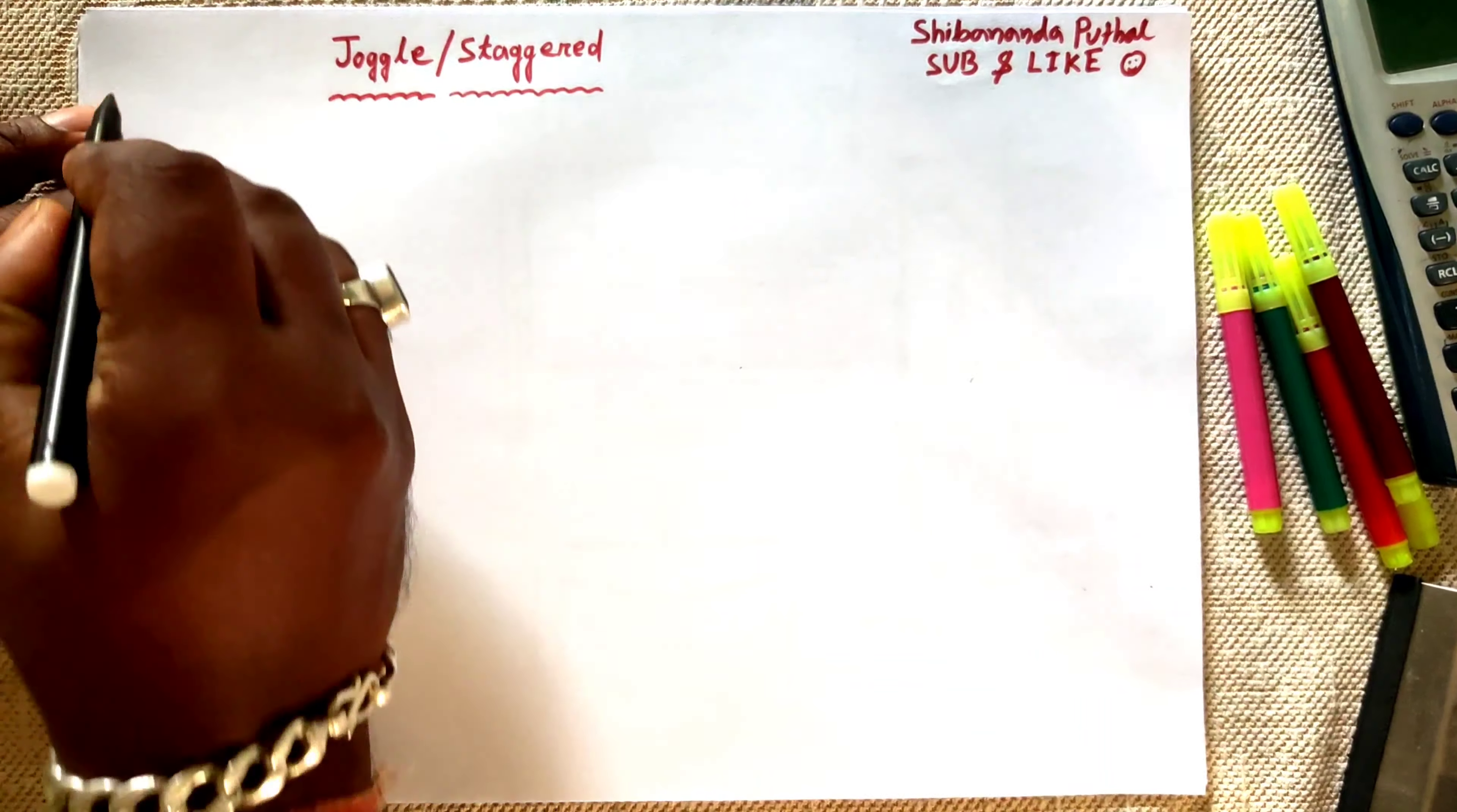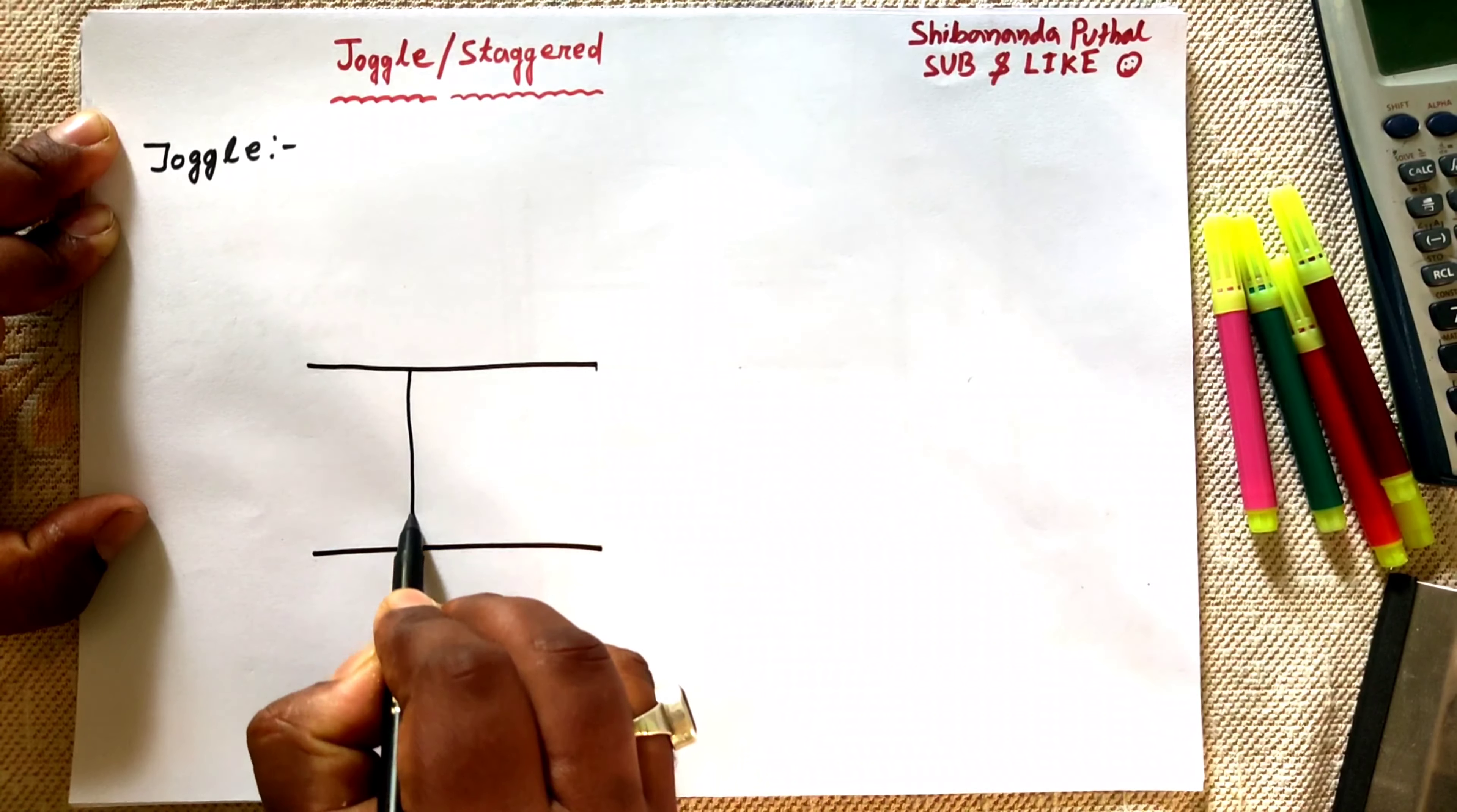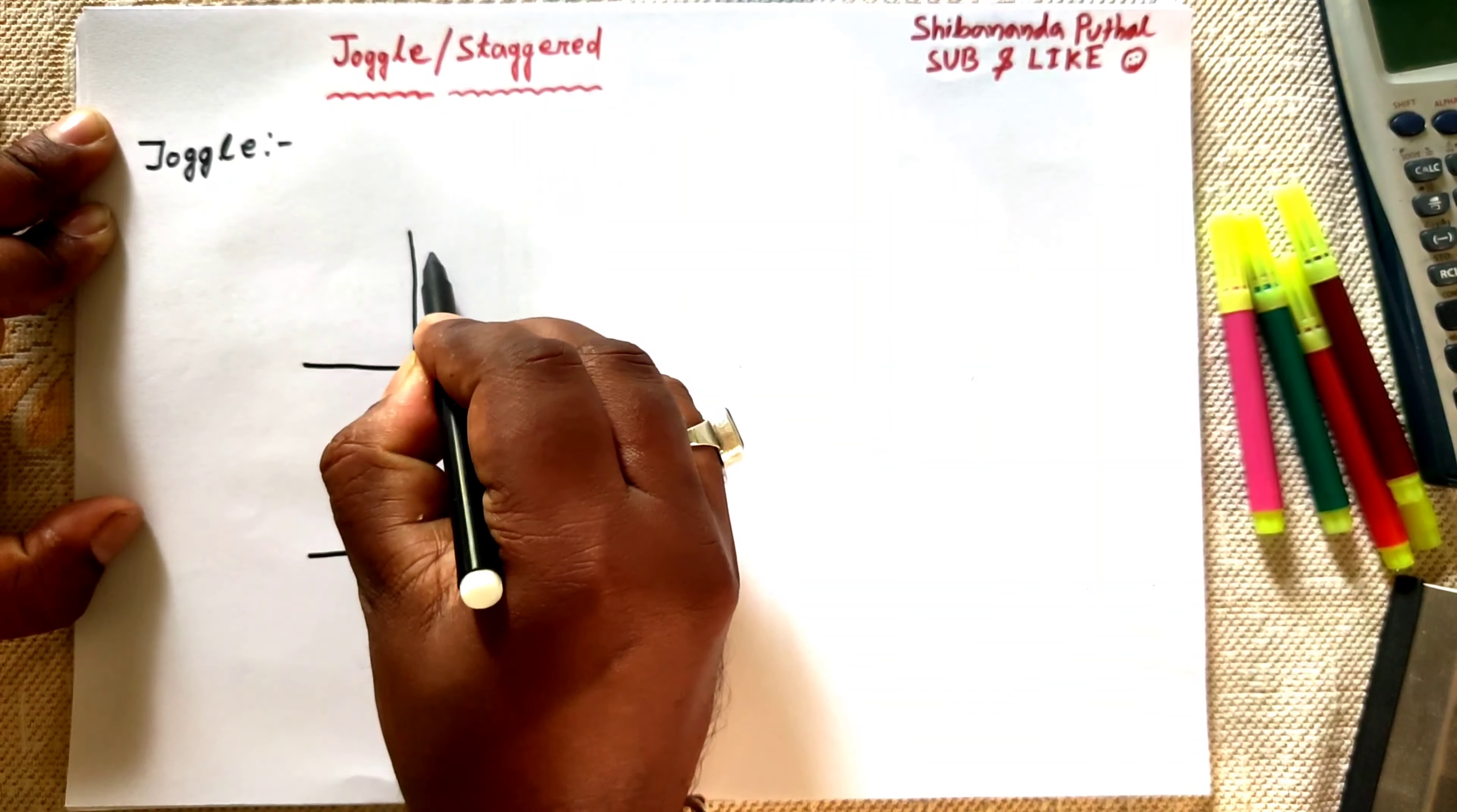First of all, Juggle. Suppose, direct example. Suppose first floor is ground floor. Suppose direct ground floor is column. If it is ground floor, first floor, then you can see the base. This is the base. Then you can see the base.